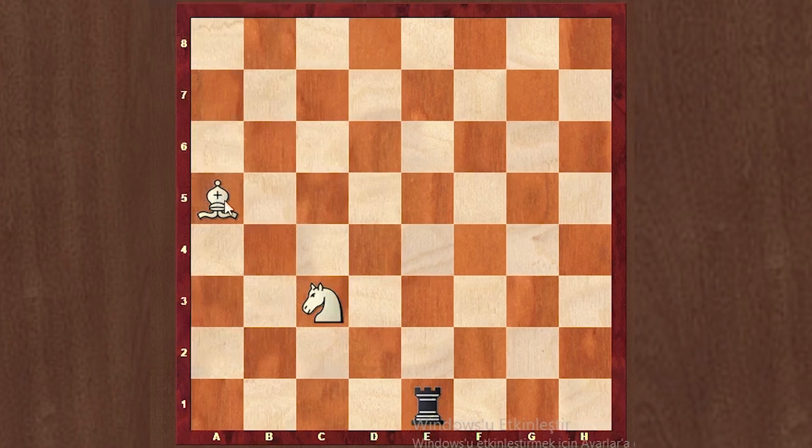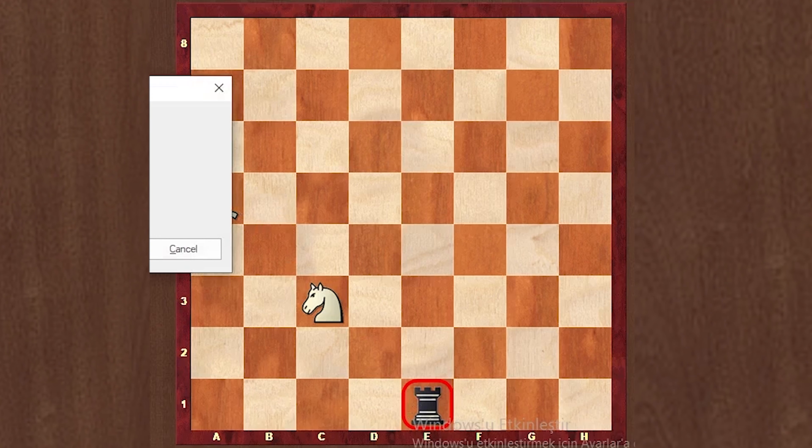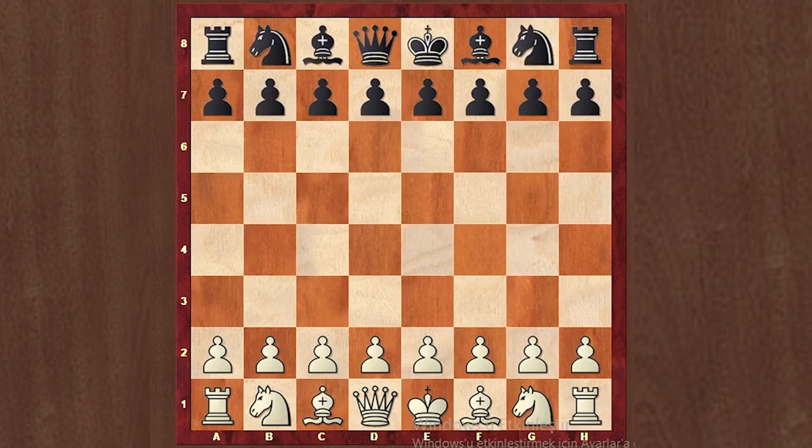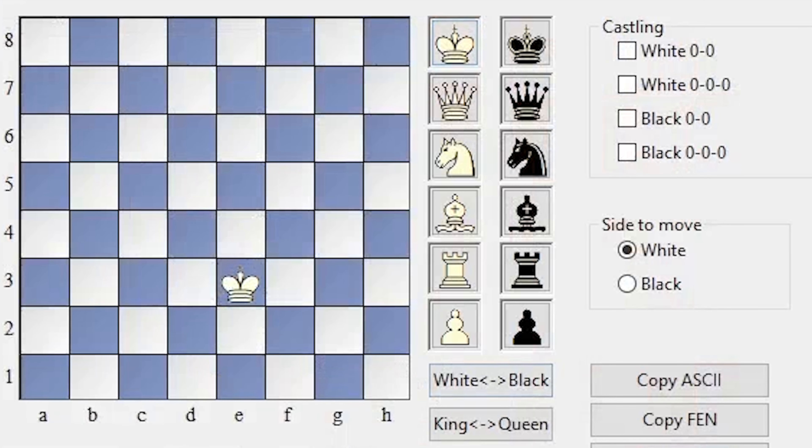Now if we repeat what we are working on: we started with the movement of the king. The king can only move one step and can move in all directions. We talked about rooks. Rooks move vertically or horizontally and cannot jump over their own piece. We said that if there is no obstacle in the way, it can go to the end of the road.